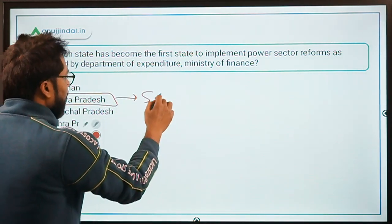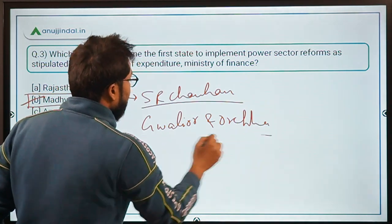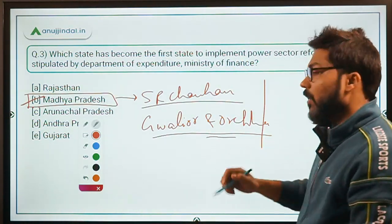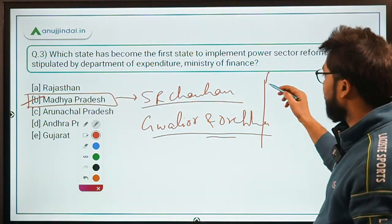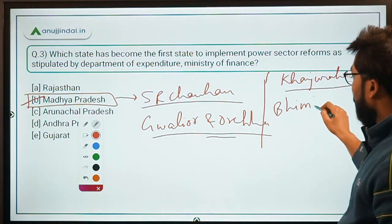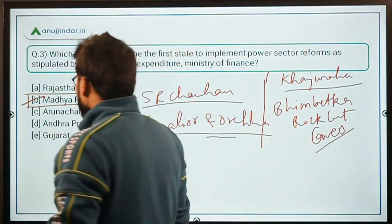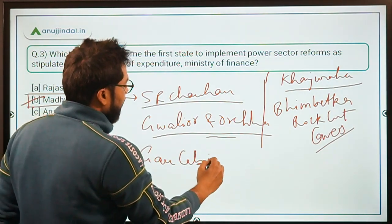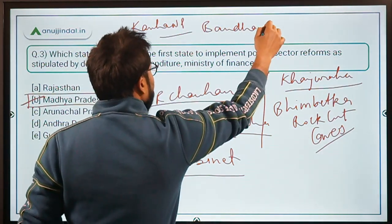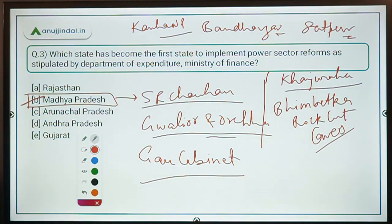Therefore, the correct answer is option B: Madhya Pradesh. The Chief Minister is Shivraj Singh Chouhan. Recently, Gwalior and Orchha have received the UNESCO World Heritage City tag. Other UNESCO World Heritage Sites in Madhya Pradesh include the Khajuraho Group of Monuments and Bhimbetka Rock Shelters. Madhya Pradesh also hosts Kanha National Park, Bandhavgarh National Park, and Satpura Tiger Reserve.